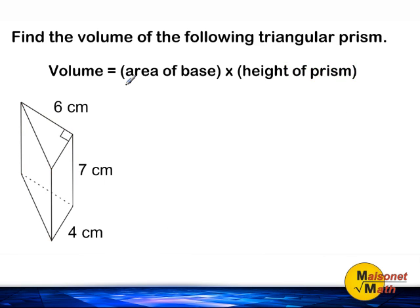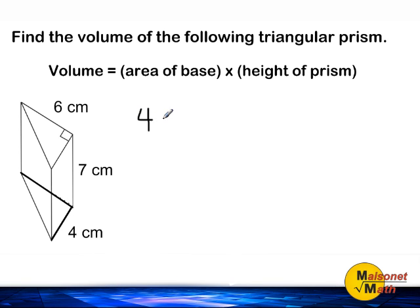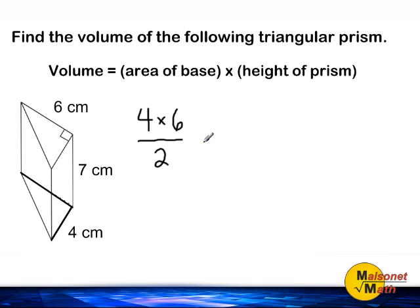So let's figure out what the area of the triangular base is. To find the area of any triangle, we multiply the base times the height of that triangle and divide that answer by 2. We will use the dimensions 4 cm and 6 cm for the height and base of our triangle. By multiplying 4 by 6 and dividing that product by 2, that will tell us what the area of our triangular base is.